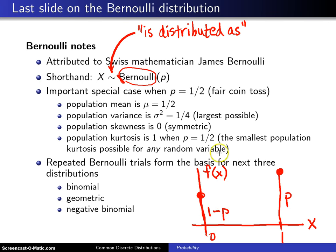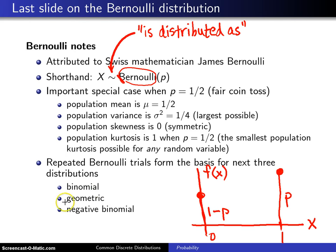These Bernoulli trials, when you conduct this experiment repeatedly, form the basis for the next three distributions that we're going to cover, and they are the binomial, the geometric, and the negative binomial distributions.